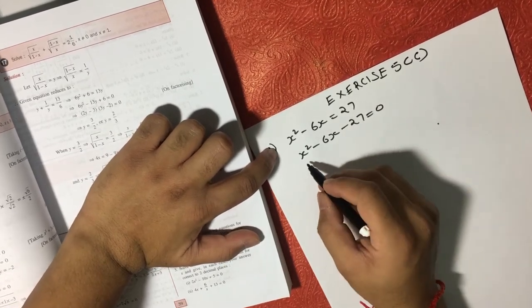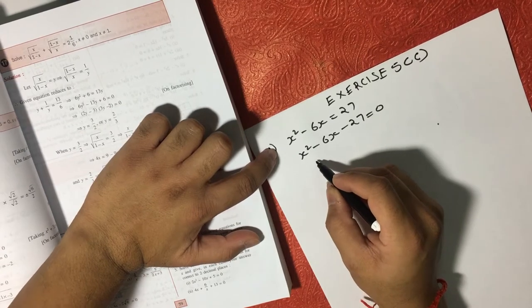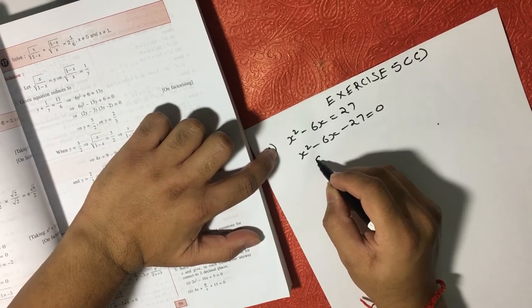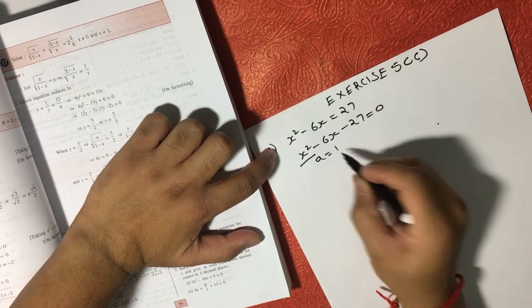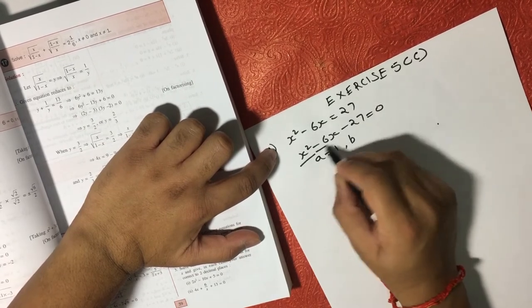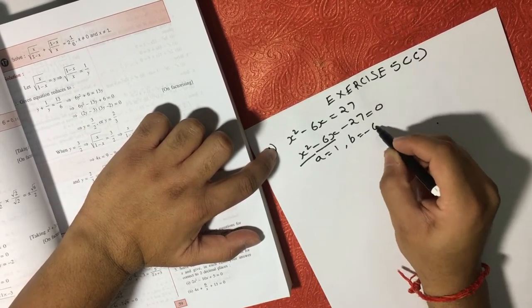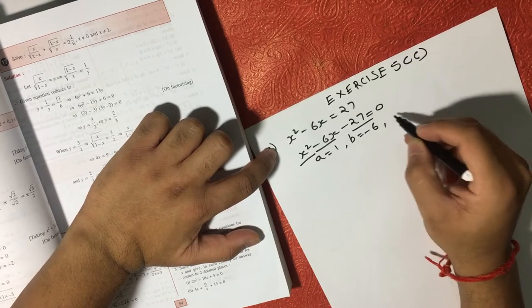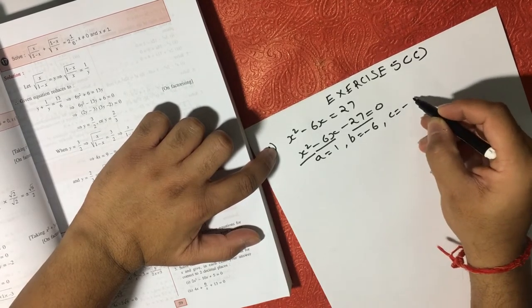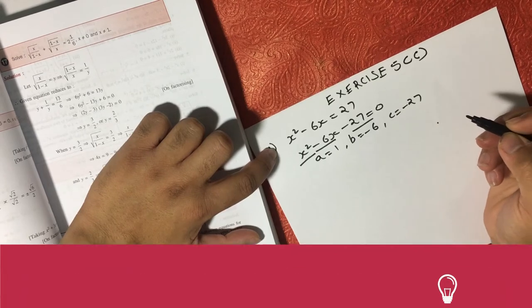Now if we try to write this equation in numerical format, so we can say A here is equal to 1, B here is equal to minus 6, and C here is equal to minus 27.